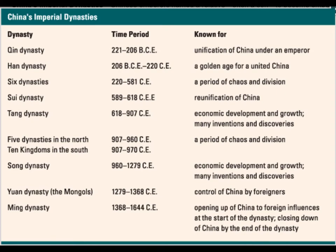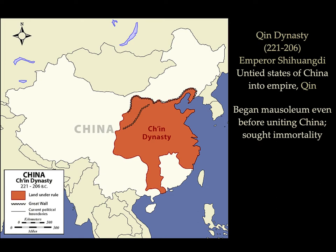Chinese history is divided into periods called dynasties, ruled by a king or emperor who comes from a continuous ruling family. The main way for a dynasty to come to an end is for the emperor to be overthrown after a rebellion or war. During the Qin Dynasty, Emperor Shi Huangdi brought an end to more than two centuries of political and social turmoil by conquering all rival states and uniting an area equal to about half of present-day China into an empire he ruled.